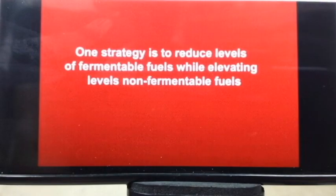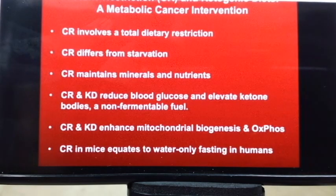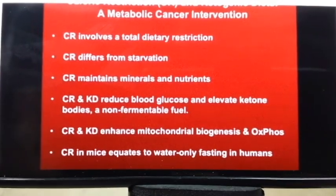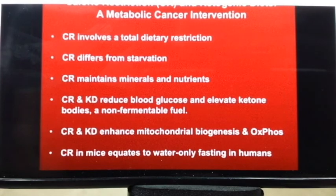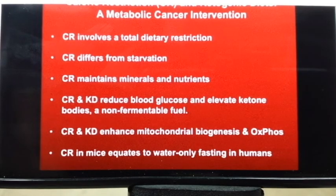If most cancer cells obtain energy through fermentation, what can we do? One strategy is to reduce fermentable fuels and give non-fermentable fuels instead. We use calorie-restricted ketogenic diets, therapeutic fasting, and related approaches. Calorie restriction and restricted ketogenic diets reduce blood glucose levels — the fermentable fuel — and elevate ketone bodies, a non-fermentable fuel. This also enhances the mitochondria in normal cells, making them healthier.